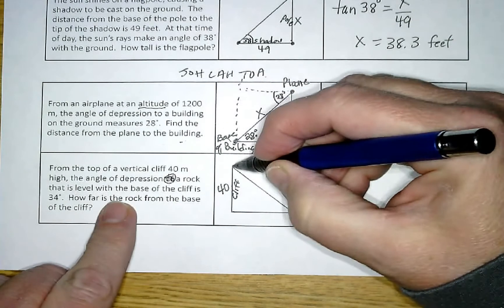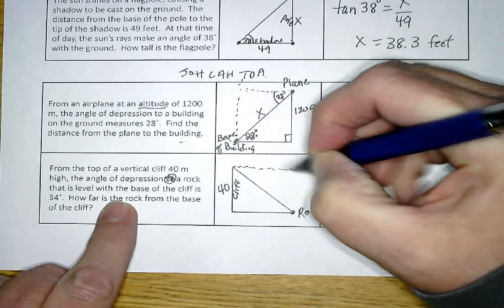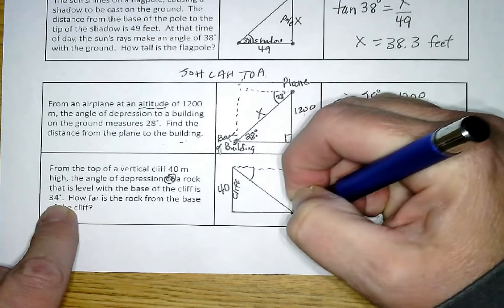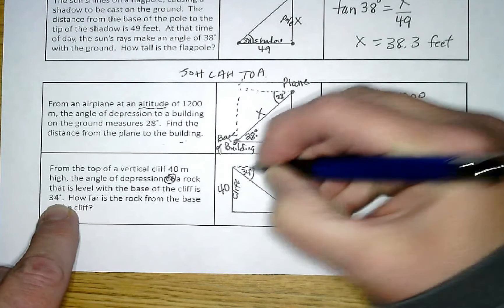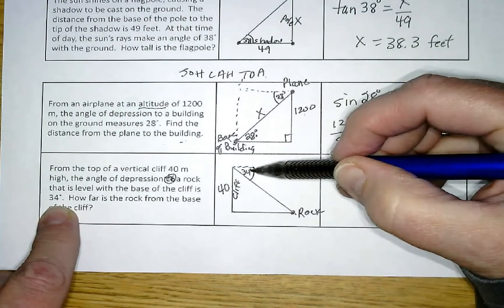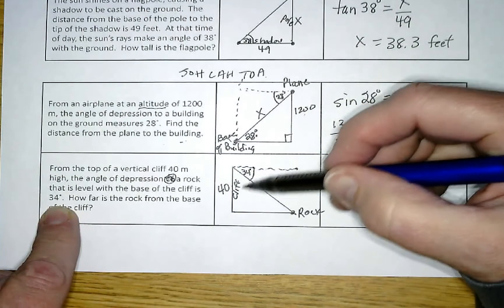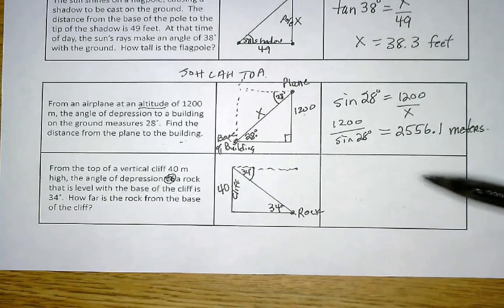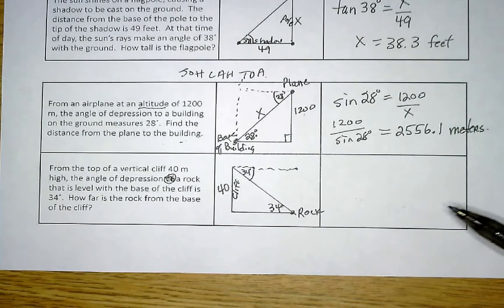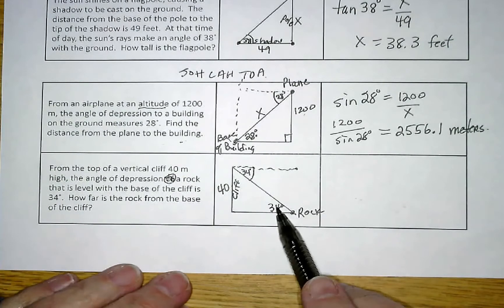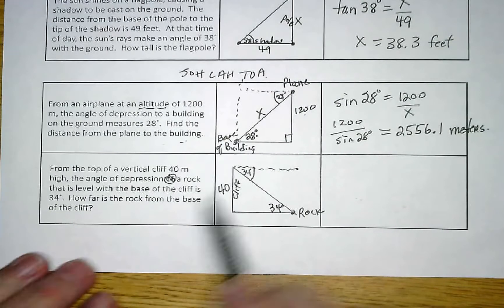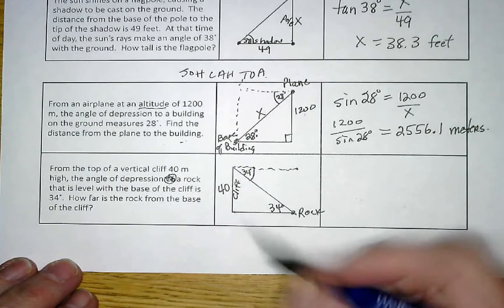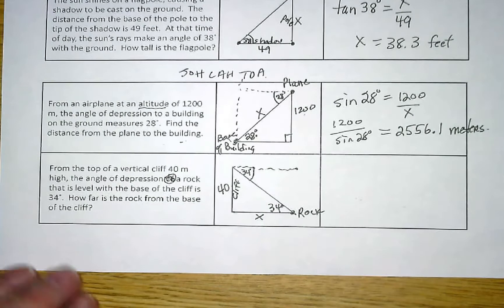So if I'm up here on the cliff and I'm looking straight out, this is my angle of depression looking down at this rock, that is 34 degrees. I can't use that 34 degrees because it's not inside my triangle, but I can convert it to down here, so now it's inside the triangle, now I can use it. If I take a look at what I have with this angle, I have the opposite side. The question is how far is the rock from the base of the cliff, so they want this value right here.